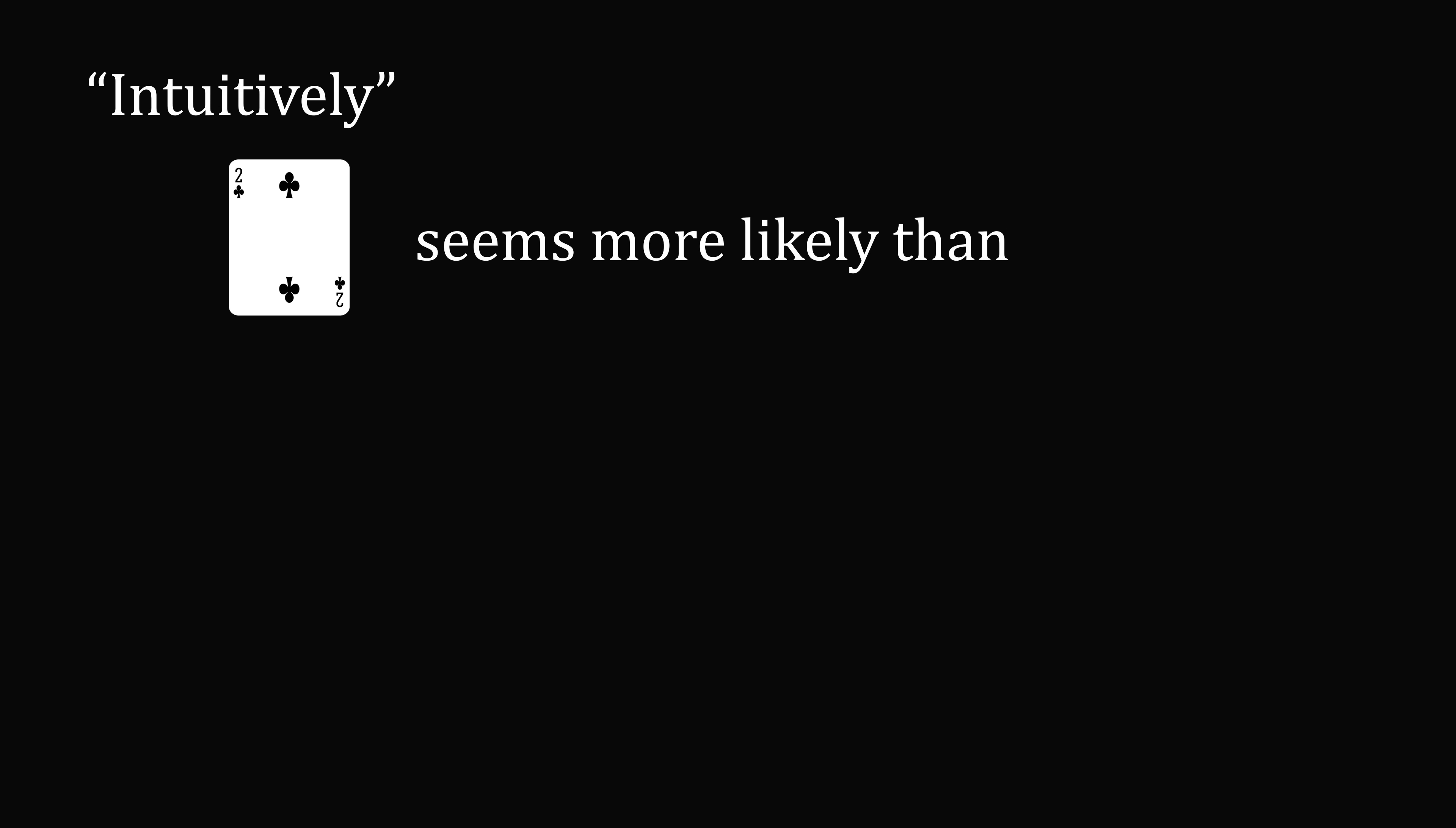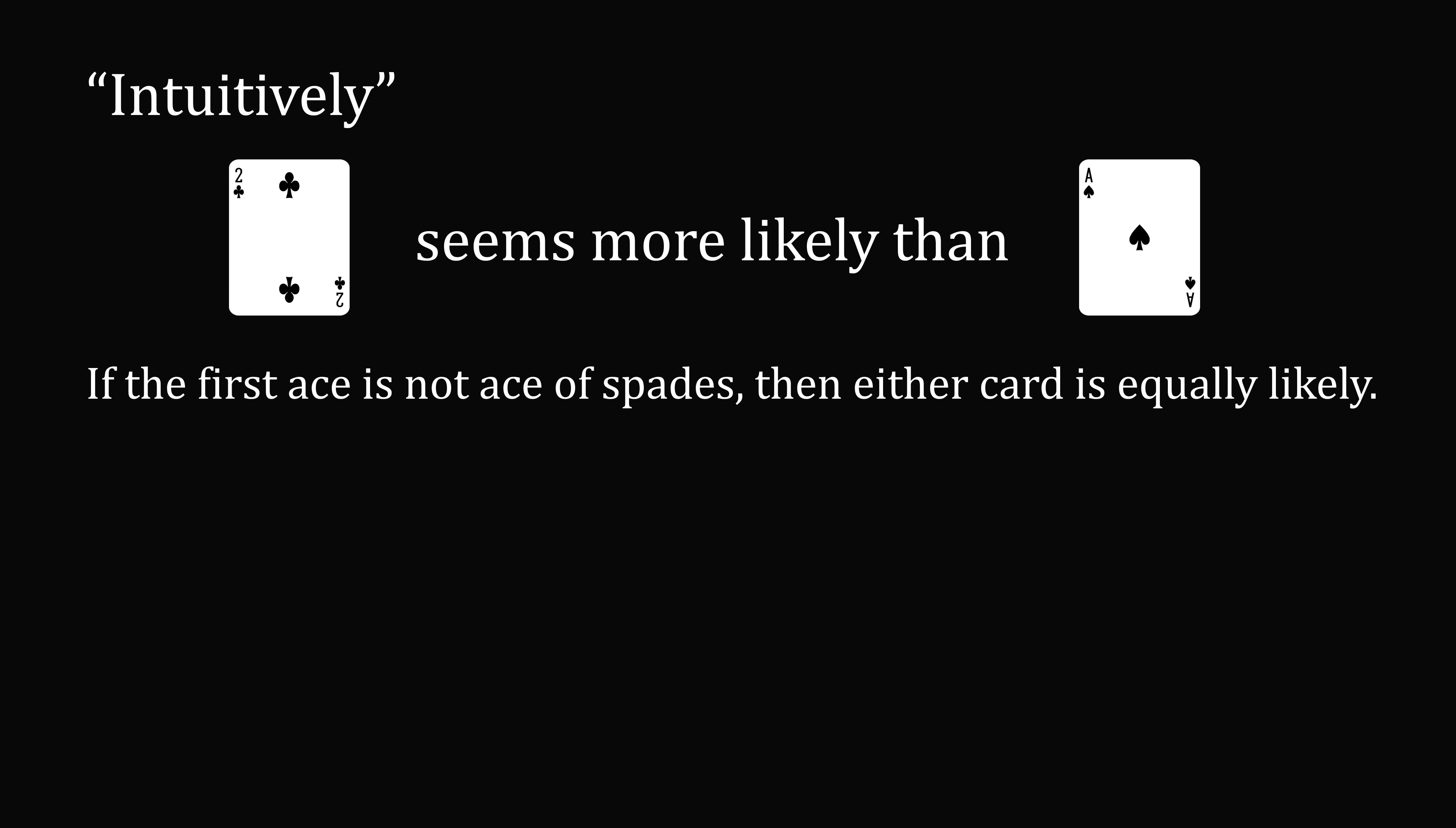So let's solve the first problem. Intuitively, it seems that the two of clubs is more likely than the ace of spades following the first ace. If the first ace is not the ace of spades, then either card is equally likely. But if the first ace is the ace of spades, then only the two of clubs can appear.